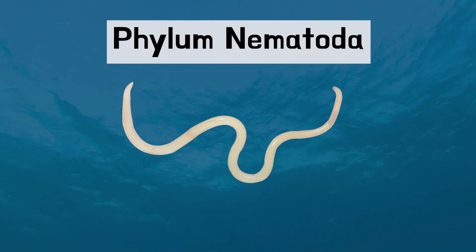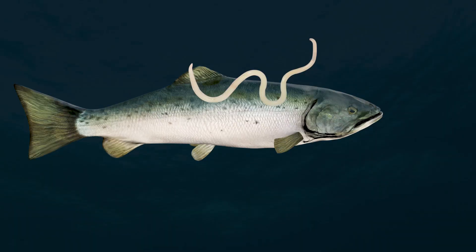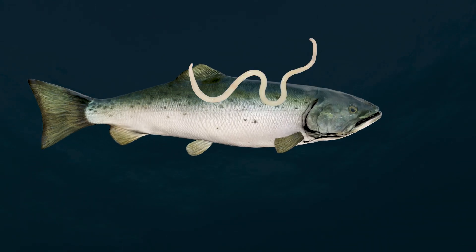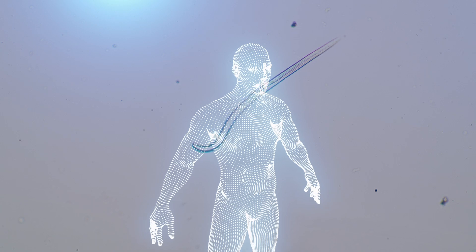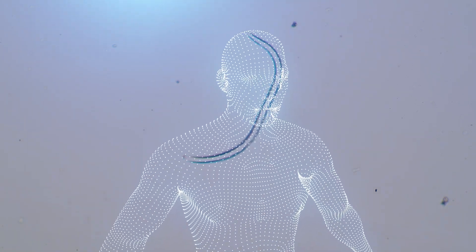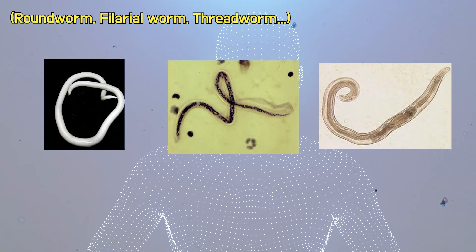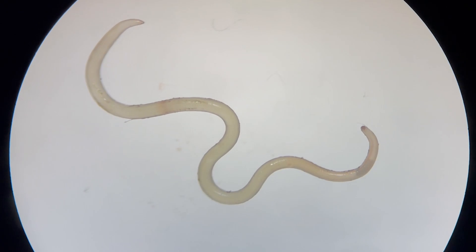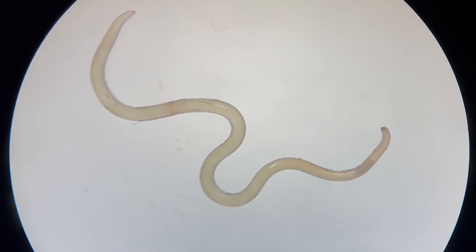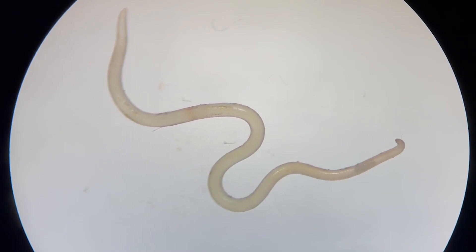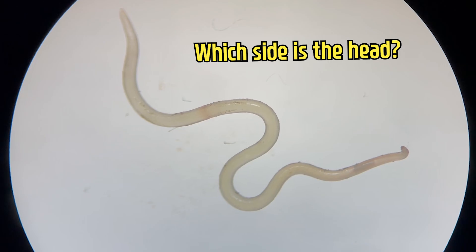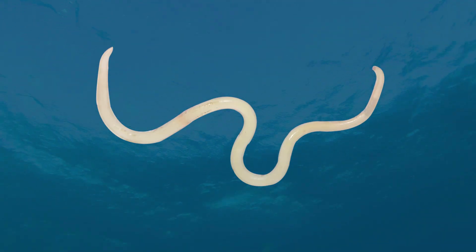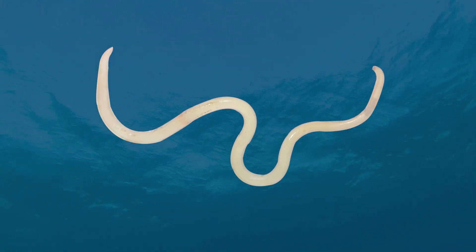Nematodes are small slender worms. Some nematodes live freely while many species parasitize other creatures. Among the parasites that infect humans there are over dozens of species. Anisakis primarily parasitizes marine creatures. Looking at its appearance, it has a very simple body structure. Which side is the head? Anisakis lacks eyes, making it difficult to locate the head.